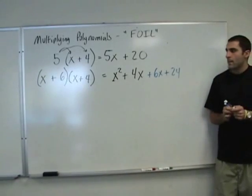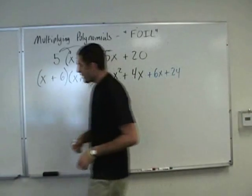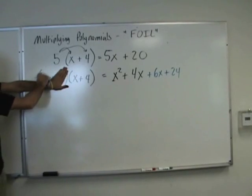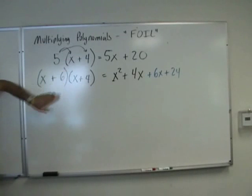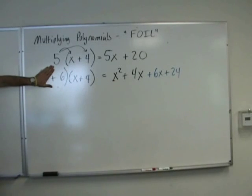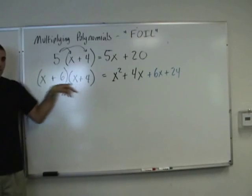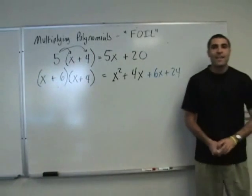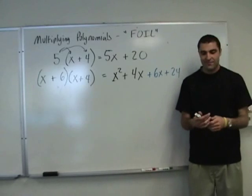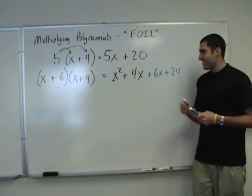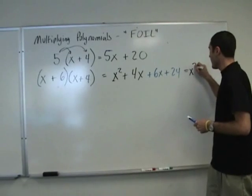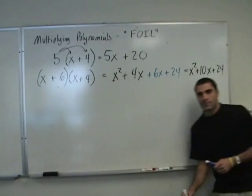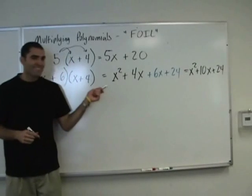So, in other words, we distributed the first x — x times x, and then x times 4 — that gave us those two. Then we distributed the 6: 6x plus 24. This is the type of problem we're working with today. Can these be combined in any way? Simplification? Yes — x squared plus 10x plus 24. That's FOIL.